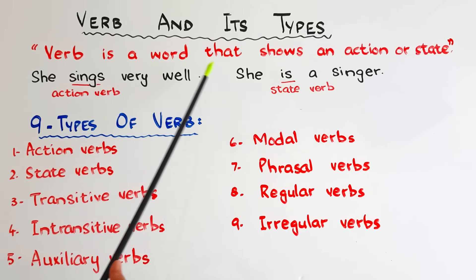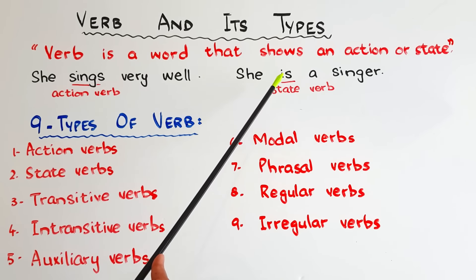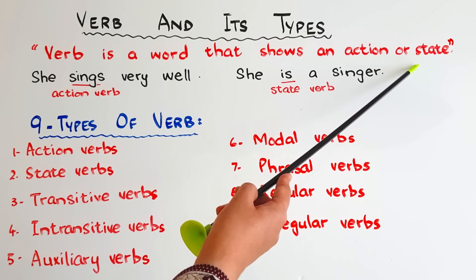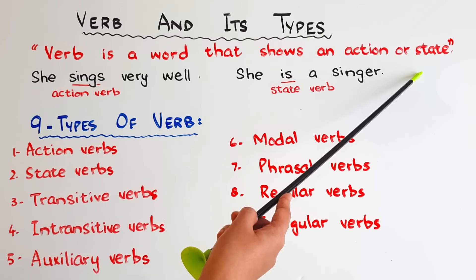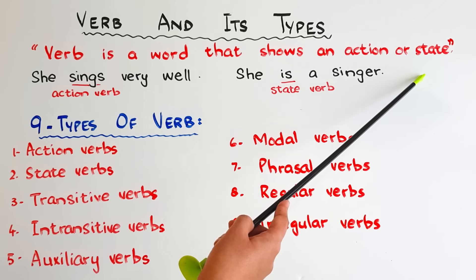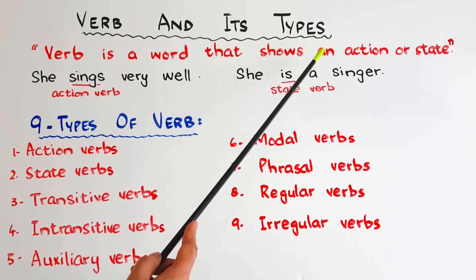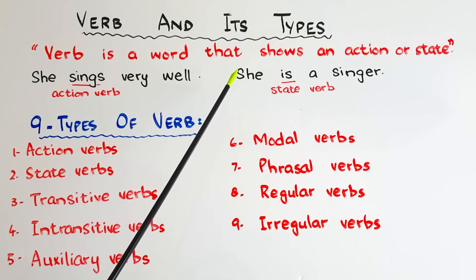You must have an idea how many times we read sentences in which we do not have any action verb but we do have a state verb. This part of the definition is always missing when we teach verbs to students, and this creates a lot of confusion, because students have in their mind that a verb only shows an action and then they cannot find the verb in sentences like these.